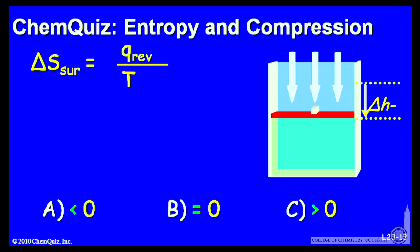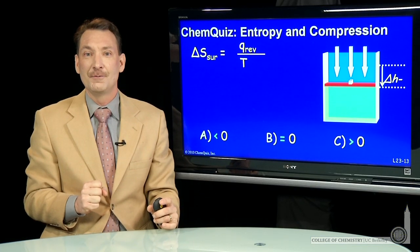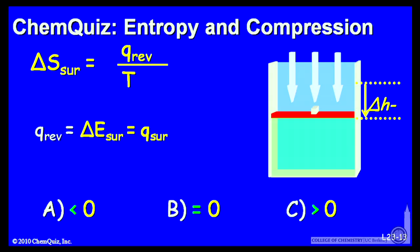So we can take that amount of heat that leaves the system, divide it by the temperature. Now, the surroundings is so big that it absorbs that energy without changing its temperature. So the energy coming into the surroundings is equal to the energy released by the system. That's positive. It's energy coming into the surroundings.